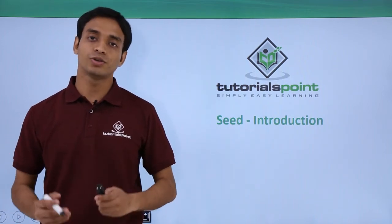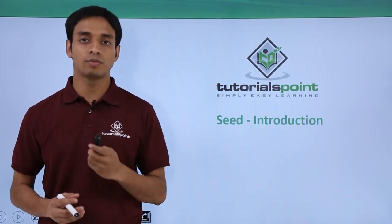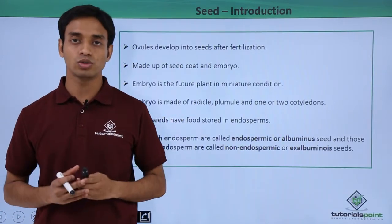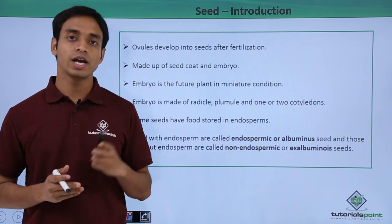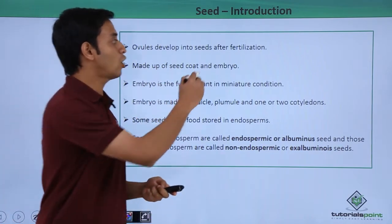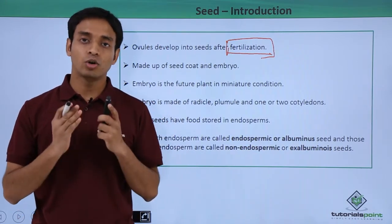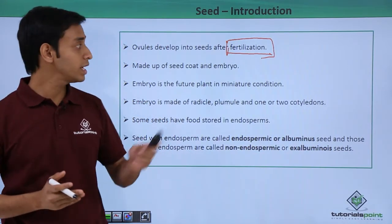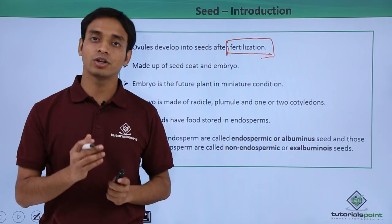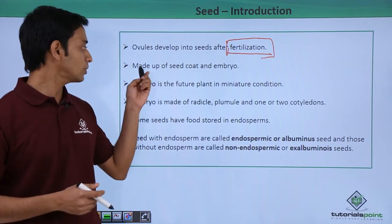Welcome to Tutorials Point. In this video we are going to talk about a very important structure of a plant, which is the seed. Seeds are born inside the fruits. We have talked about fruits in a previous video. Seeds are formed from the ovule. The ovules develop into seeds only after the process of fertilization, after the fusion of male and female gametes. The ovules present inside the ovary get transformed into seeds, while the outer covering of the fruit is made up of the outer covering of the ovary.